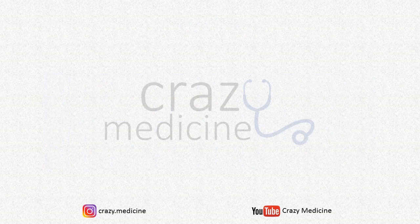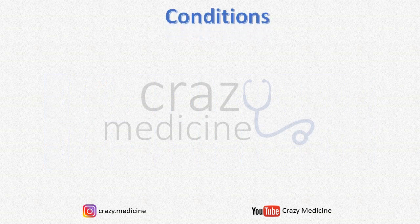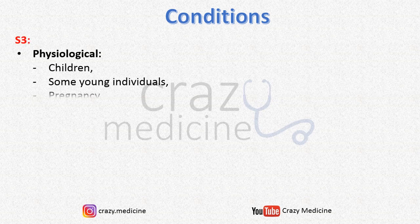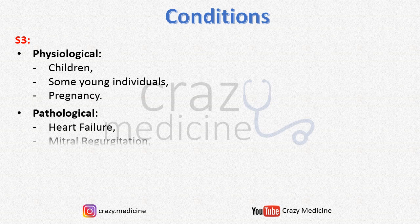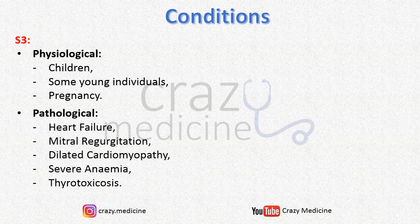Before this video ends, note down the conditions in which S3 and S4 gallops are heard. S3 can be normal — physiological — in children, some young individuals, and pregnancy. Important pathological causes include heart failure, mitral regurgitation, dilated cardiomyopathy, and hyperdynamic circulation states like severe anemia and thyrotoxicosis.